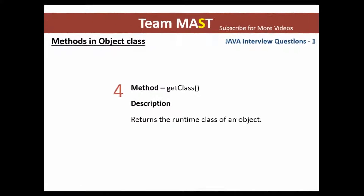Next, we have the getClass method. This method is used to return the runtime class of an object, and you can use it whenever you want to get the class name at runtime.